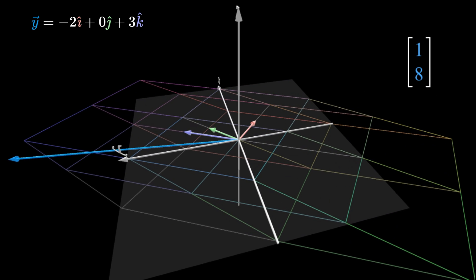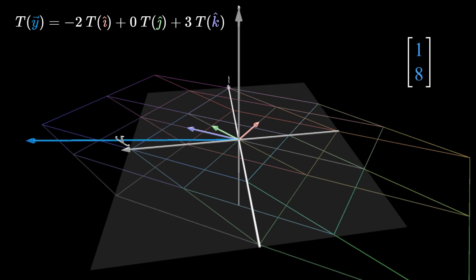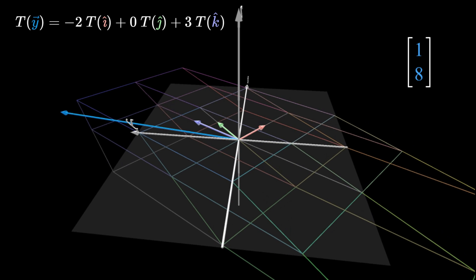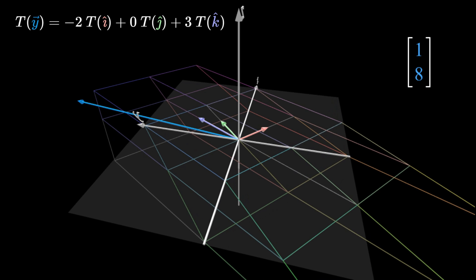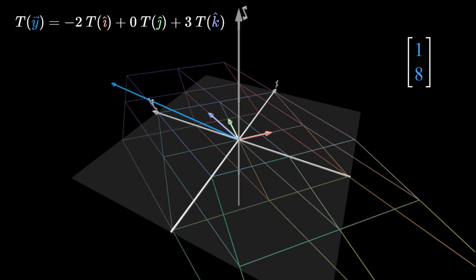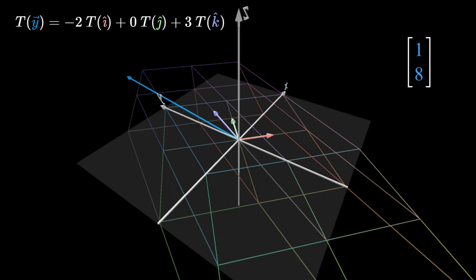our transformed vector Y is the same linear combination of the transformed basis vectors. Keep in mind that the three new basis vectors are all two-dimensional creatures now, and the transformed vector Y is two-dimensional as well.